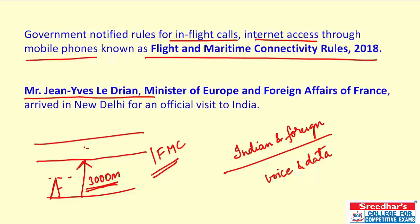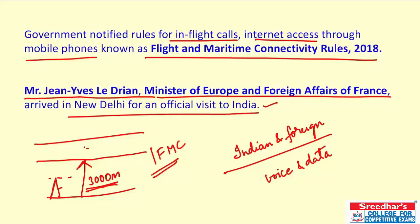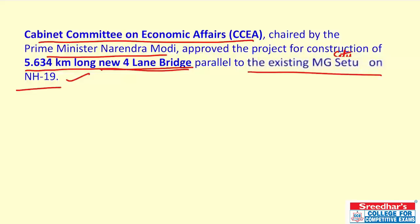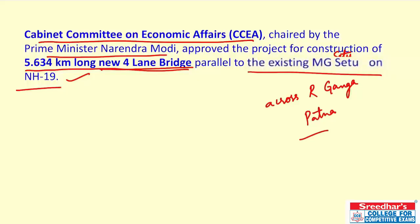France's Minister of Europe and Foreign Affairs, Jean-Yves Le Drian, is on an official visit to India. The Cabinet Committee on Economic Affairs, chaired by PM Narendra Modi, has approved a project for the construction of a 5.634 km long new four-lane bridge parallel to the existing Mahatma Gandhi Setu on NH-19, to be built across the River Ganga at Patna, Bihar, with an estimated outlay of ₹2,961 crore.